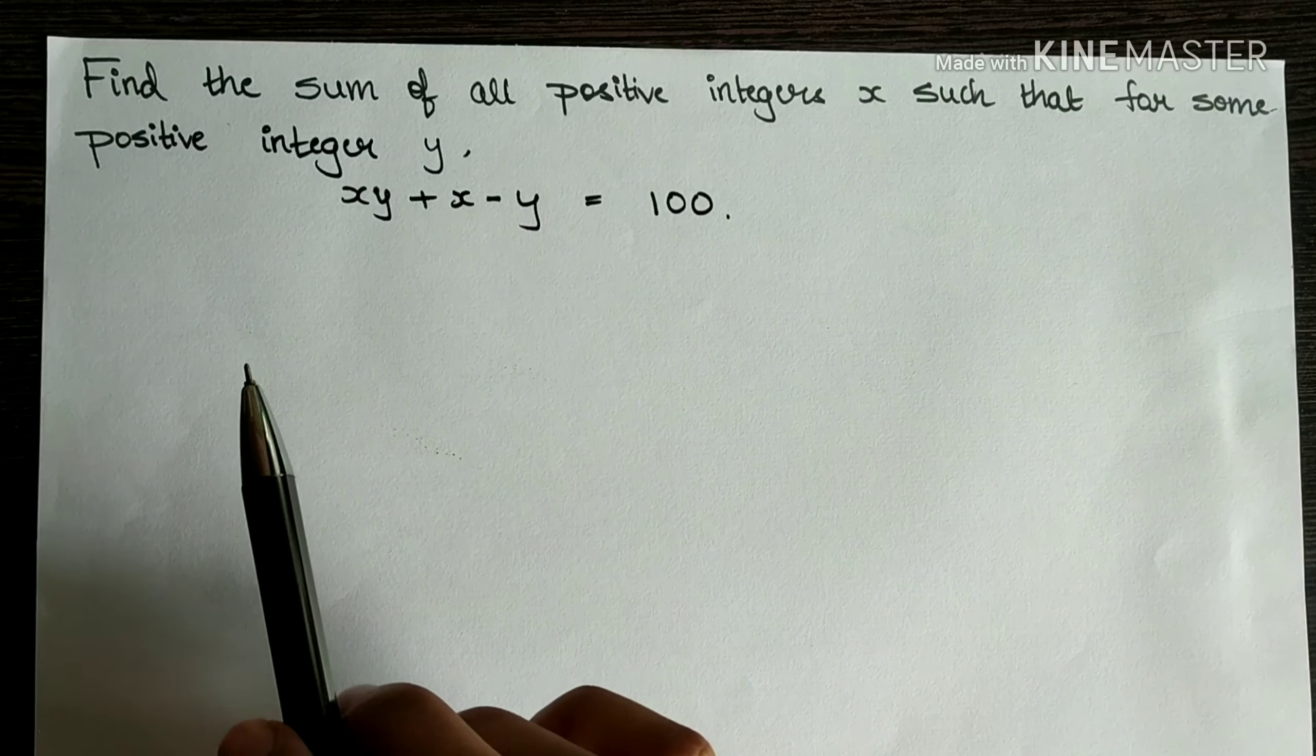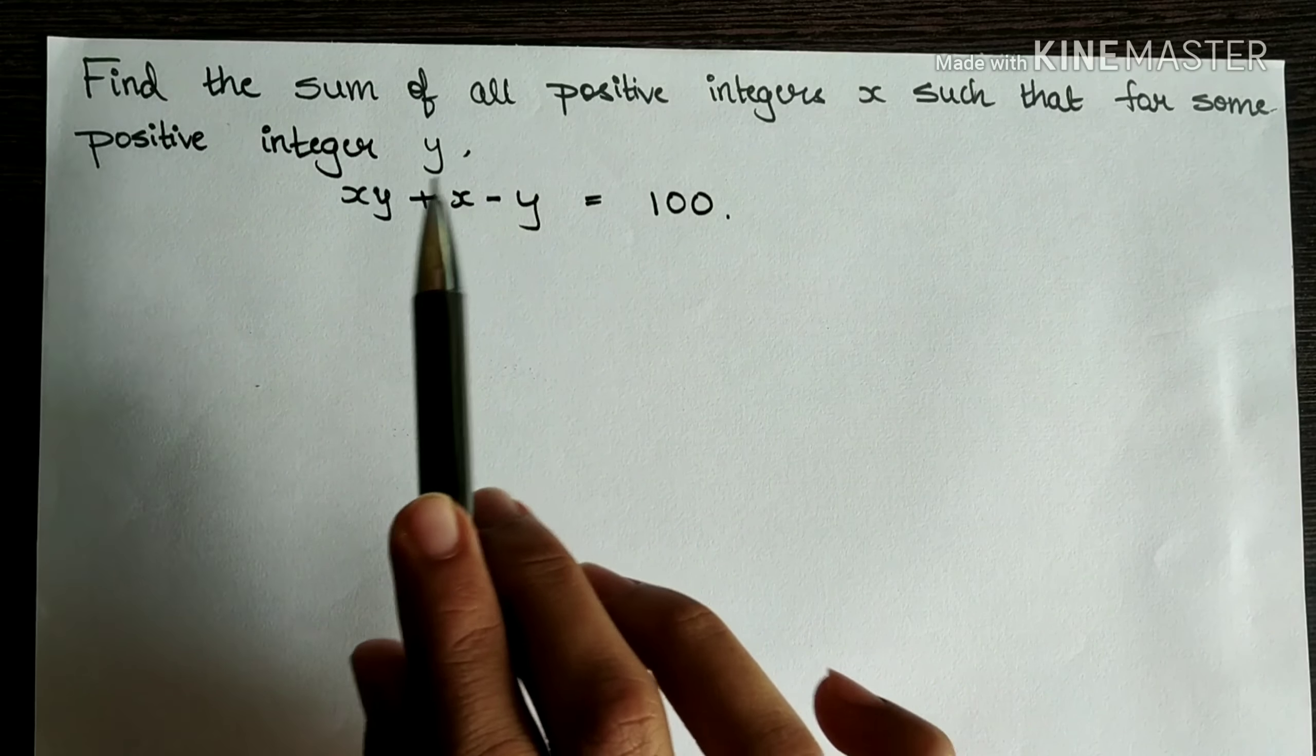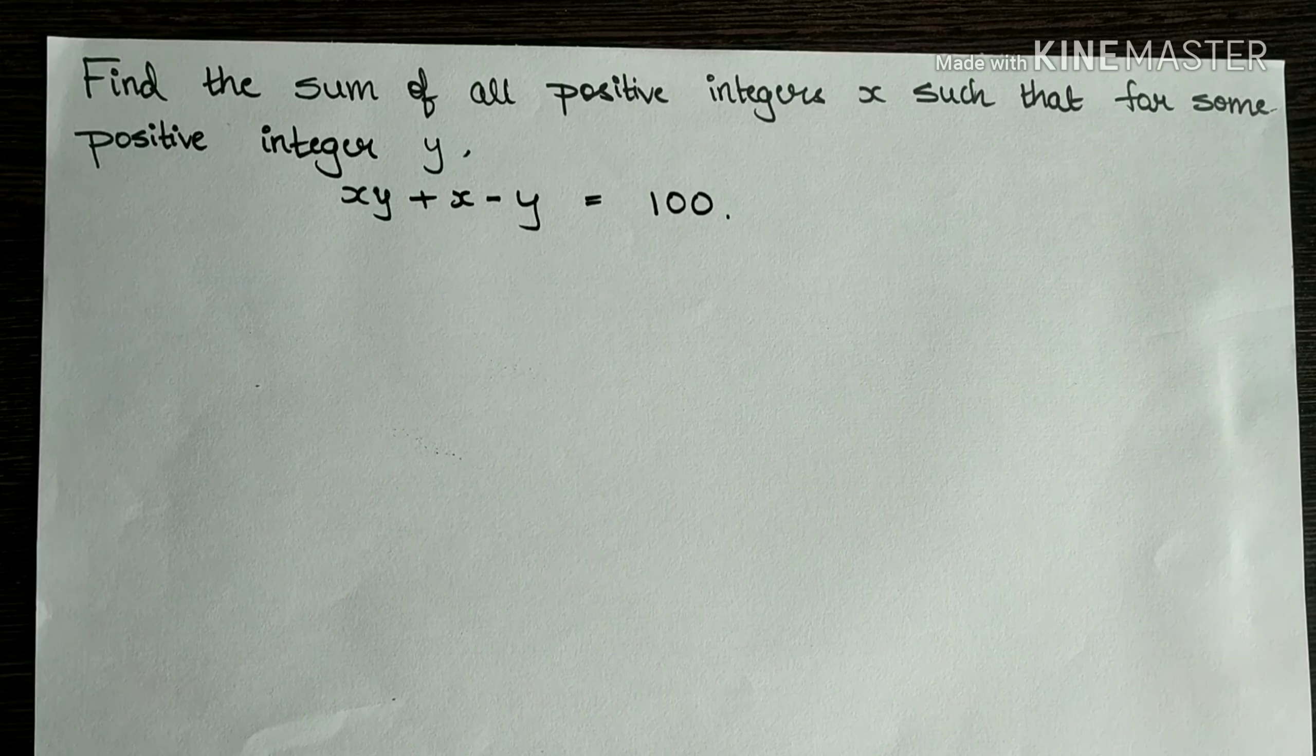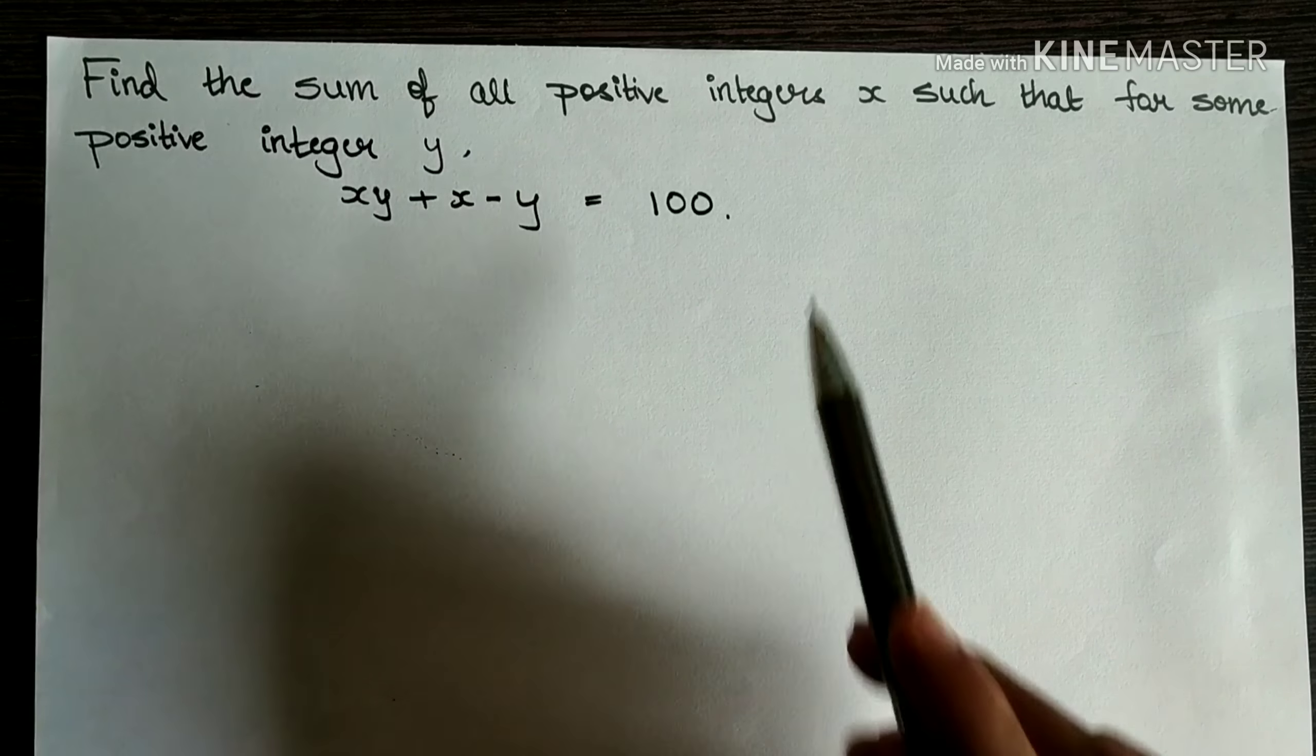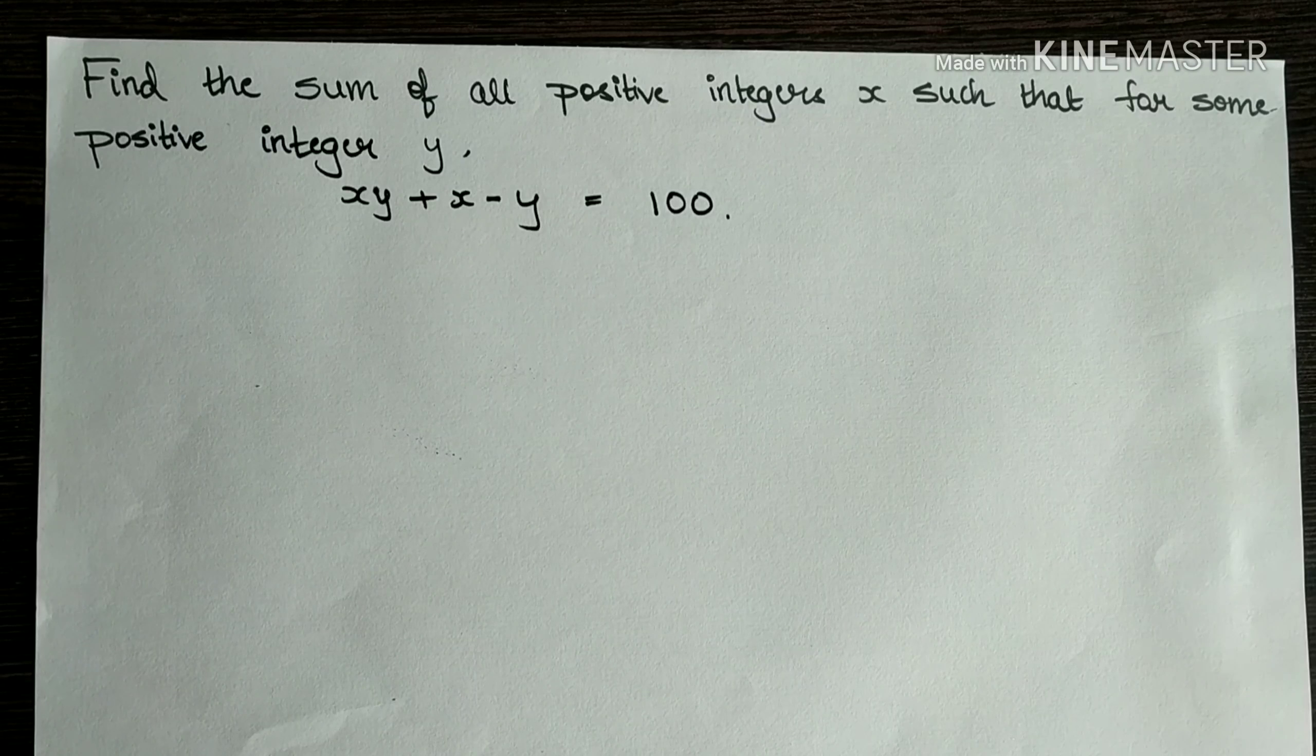Let's understand the question. Find the sum of all positive integers x. That is here we can see x over here. We just need to find the values and add all of them which satisfy this. And the condition, the only condition is that y is a positive integer. And this equation is given such that both of them satisfy that. Now how do we begin?